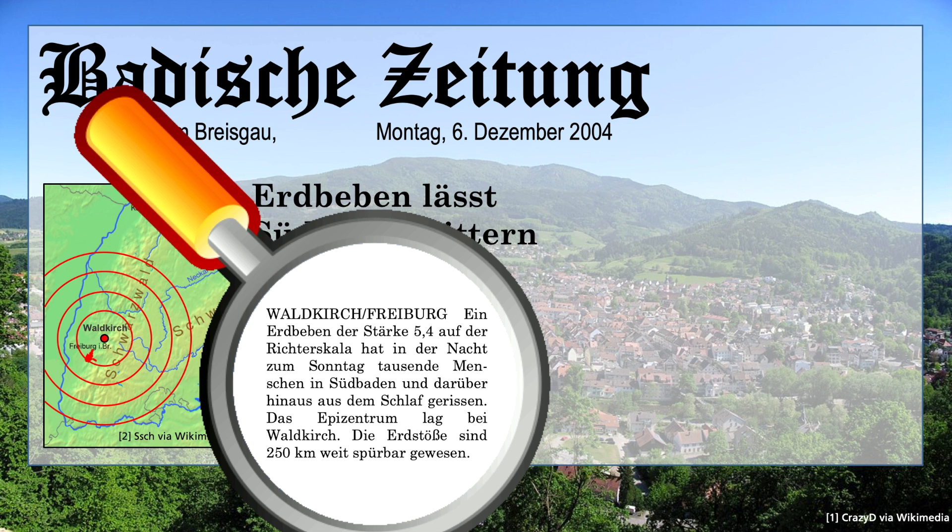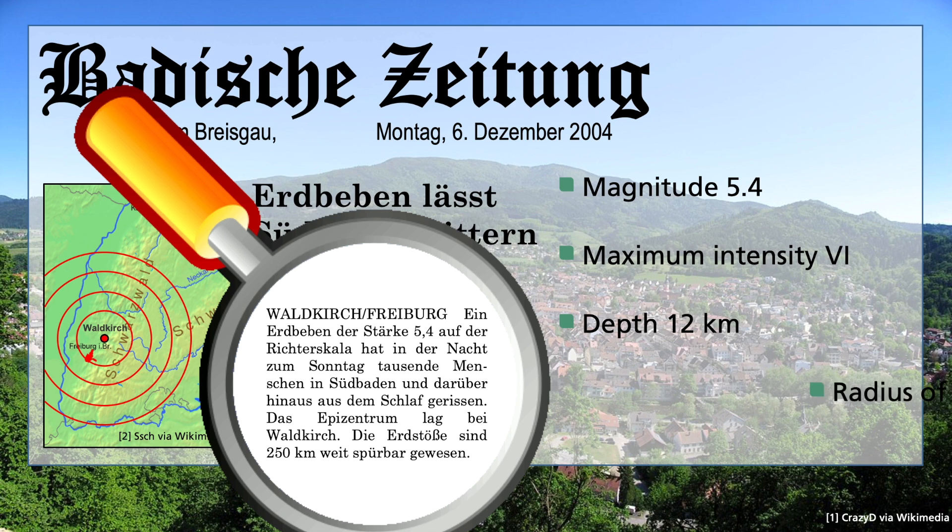And if you have felt an earthquake in Germany in the past, it might have been this one. The earthquake on December 5, 2004 is described using the following scientific parameters: It had a magnitude of 5.4, a maximum intensity of 6, and occurred at a depth of 12 kilometers. The epicenter was located near Waldkirch.